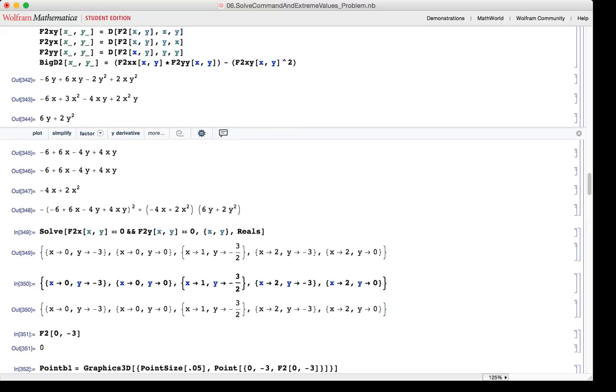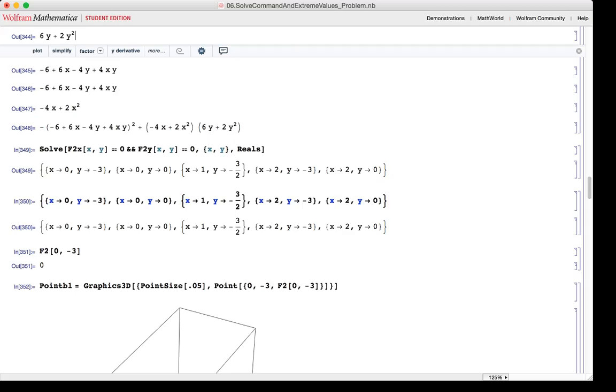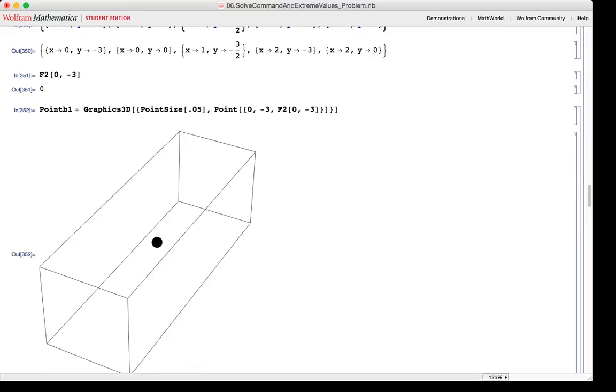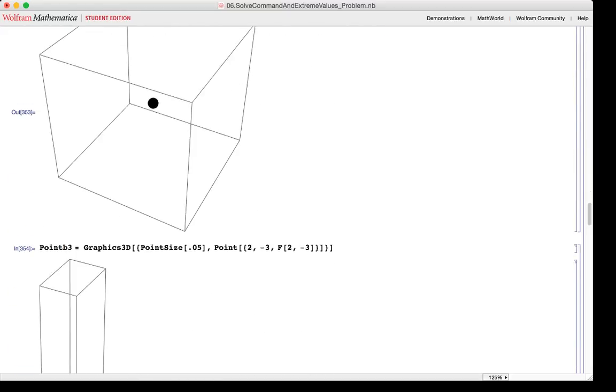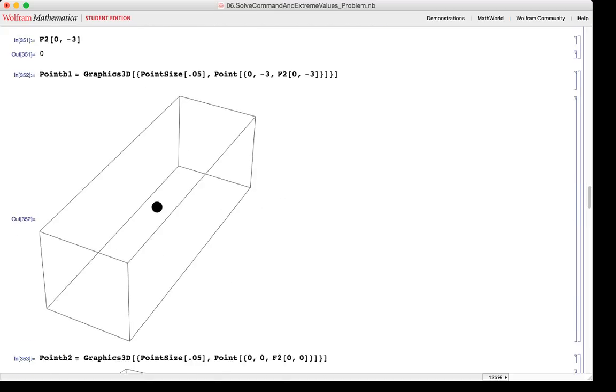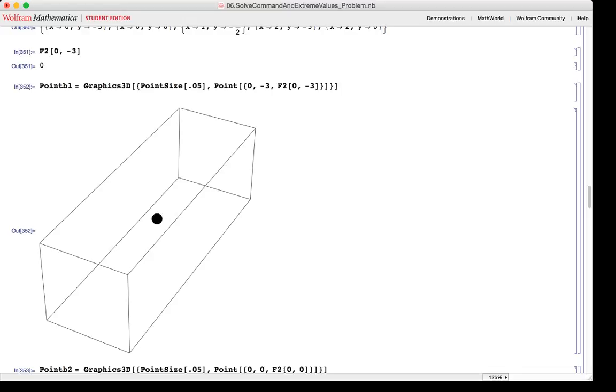And 5 ordered pairs are resulting: 0, minus 3, 0, 0, 1, minus 3 halves, 2, minus 3, and 2, 0.